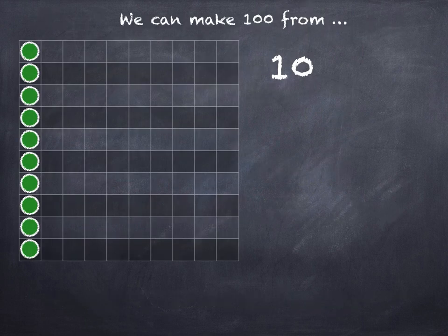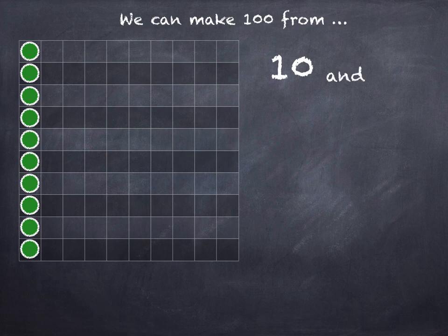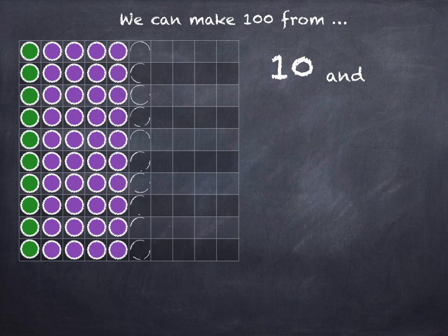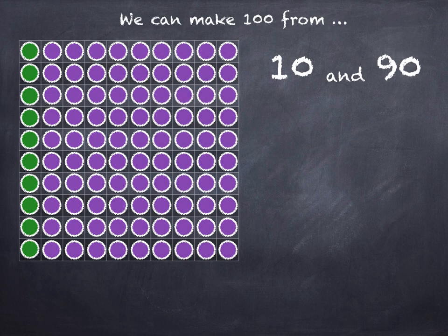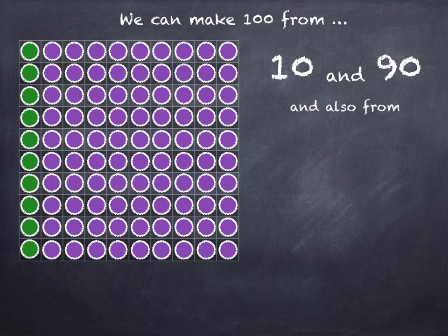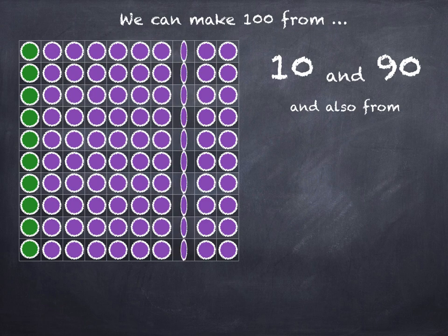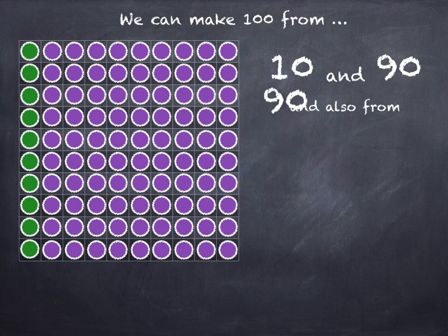We can make 100 from 10 and 90, 20, 30, 40, 50, 60, 70, 80, 90, and also from 90, 80, 70, 60, 50, 40, 30, 20, and 10.